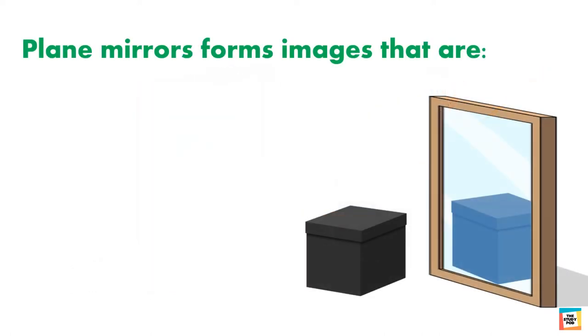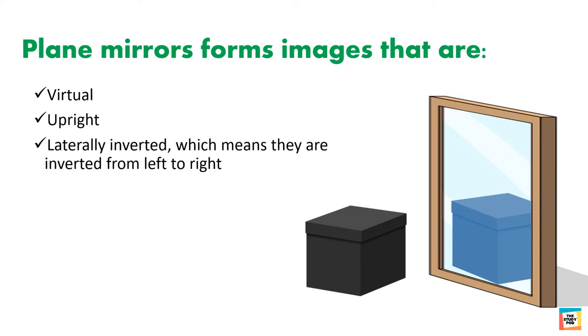Plane mirrors form images that are virtual, upright, and laterally inverted — which means they are inverted from left to right. And they are the same size as the object.